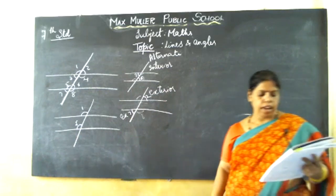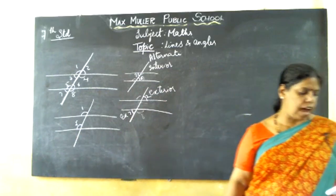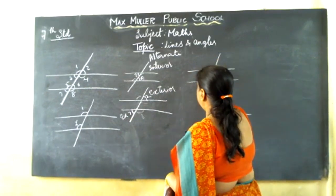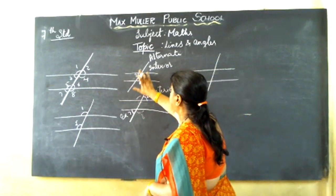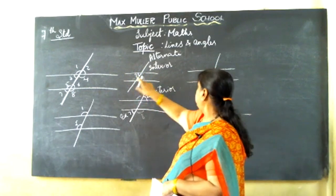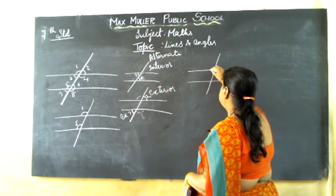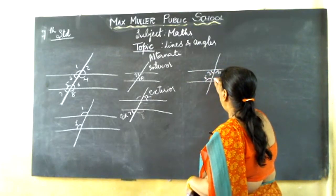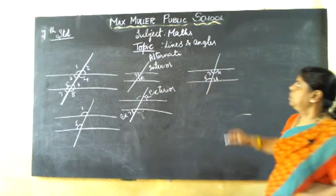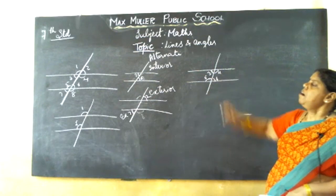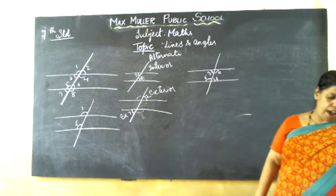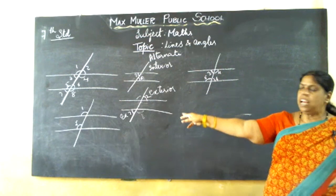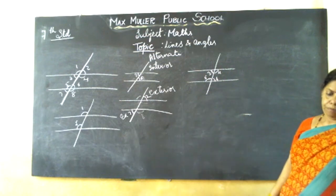Did you understand this? Next, pairs of interior angles on the same side. Pair means two angles. Angles 3 and 4 will be on one side, and 5 and 6 on the other. This is the interior. Pair of interior angles. And pair of exterior angles will be 1 and 2, and 7 and 8.